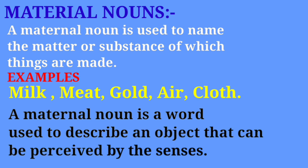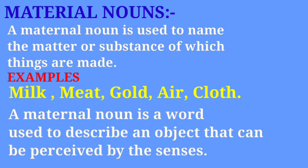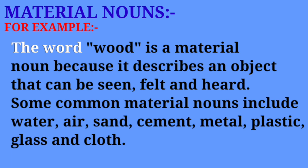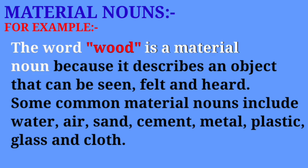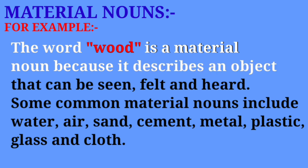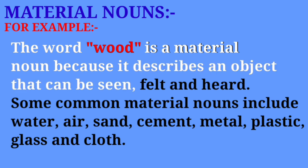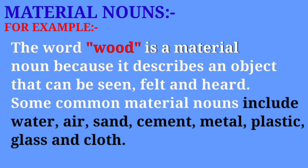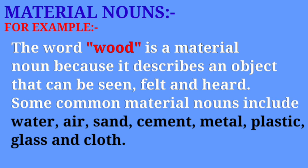The material noun is a word that is used to describe an object or a shape that can be perceived by the senses. For example, the word 'agab' is a material noun because it describes an object or shape that can be seen and felt.